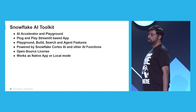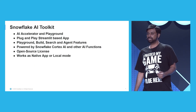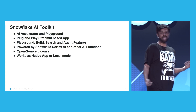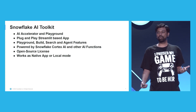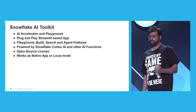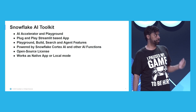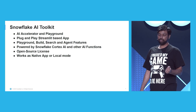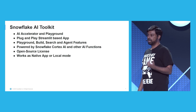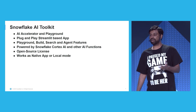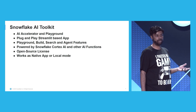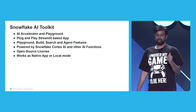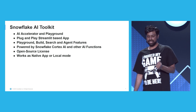What did we decide to do about it? This started as a hobby project working with customers, and then I decided to make it open source because I think there's good value in having a lot of customers adopt it. We created the open source AI toolkit. It's an AI accelerator and a playground. It's a Streamlit-based app, so you can deploy it on Streamlit in Snowflake, or convert it into a native application and deploy it in Snowflake. It has various capabilities like a playground, build, search, and agent features.